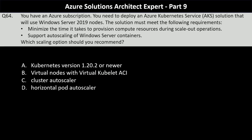Next question. You have an Azure subscription. You need to deploy an Azure Kubernetes Service solution that will use Windows Server 2019 nodes. The solution must minimize the time it takes to provision compute resources during scale-out operations and support auto-scaling of Windows Server containers. Which scaling option should you recommend? Your options are: Kubernetes version 1.20.2 or newer, virtual nodes with virtual kubelet ACI, cluster autoscaler, or horizontal pod autoscaler.